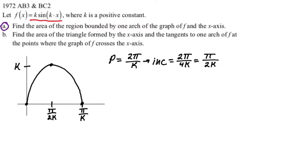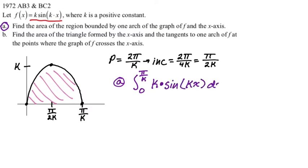Part a. We're going to find the area of the region bounded by one arch of the graph of f and the x-axis. So I'm doing the first arch. I mean, I guess you could do any of them. So I'm going to say this is the region that I'm trying to find the area of. And this is very straightforward. This is just the integral from 0 to π over k of our function. Our function has a k in it. So it's k times sine of kx. But we're not afraid of that. Right? And then dx.